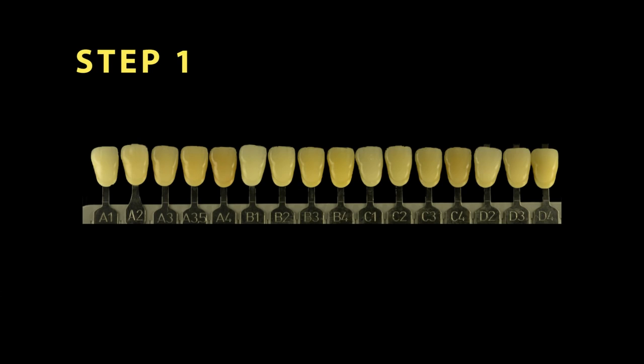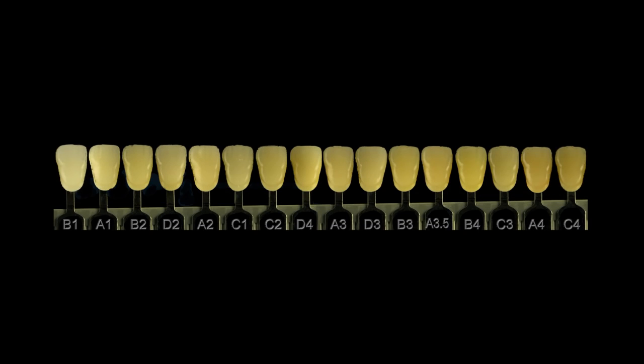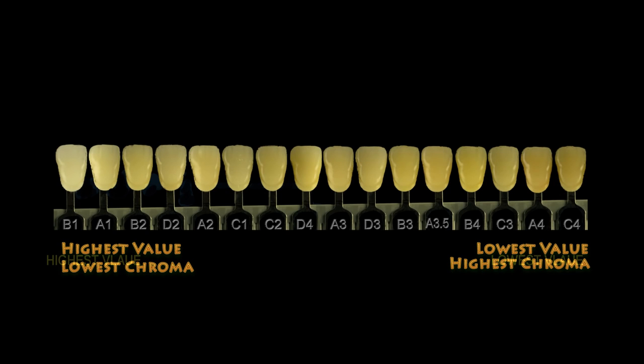Step 1. Because the human eye is most sensitive to the value of a color, we will rearrange the Shade Guide according to value. The Shade Tabs are now B1, A1, B2, D2, A2, C1, C2, D4, A3, D3, B3, A3.5, B4, C3, A4, and C4.